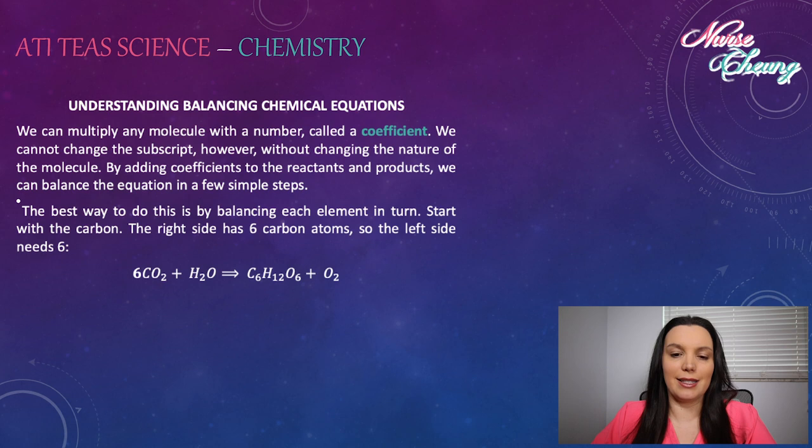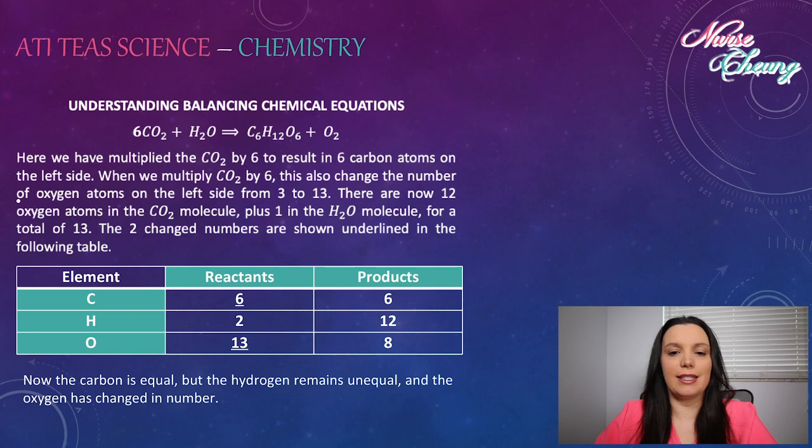The right side has six carbon atoms and the left side needs six as well. We have multiplied the CO2 by six to result in six carbon atoms on the left side. When we multiply CO2 by six, this also changes the number of oxygen atoms on the left side from three to 13. There are now 12 oxygen atoms in the CO2 molecule and one in the H2O molecule for a total of 13. The two changed numbers are shown underlined in the following table.